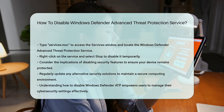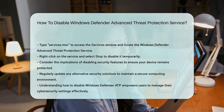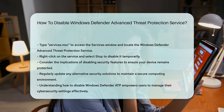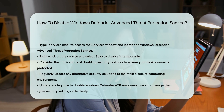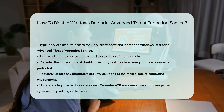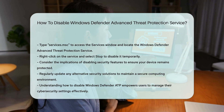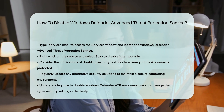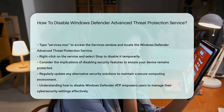Always consider the implications of disabling security features. It is crucial to ensure that your device remains protected by alternative means. Regularly update your security solutions to maintain a secure computing environment. By understanding the steps involved in disabling Windows Defender ATP, users can take control of their device's security settings. This knowledge empowers users to make informed decisions regarding their cybersecurity needs.